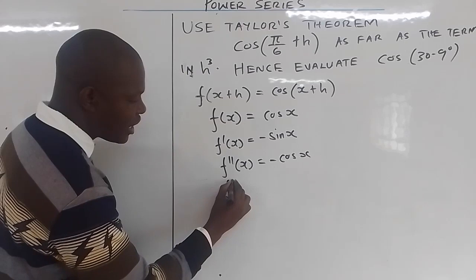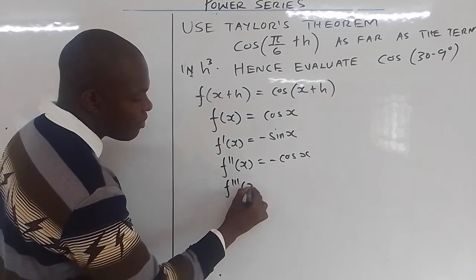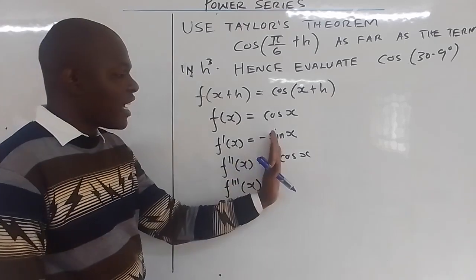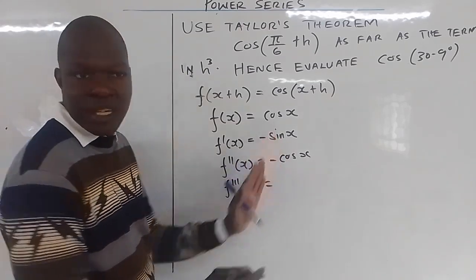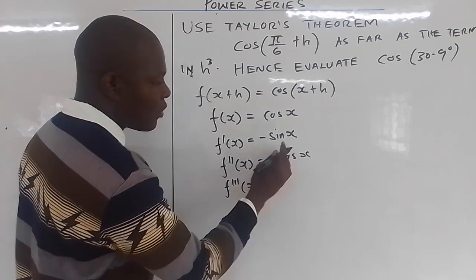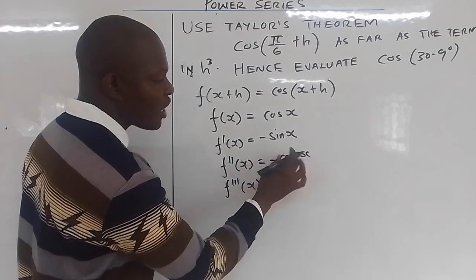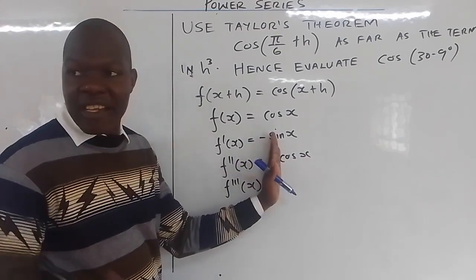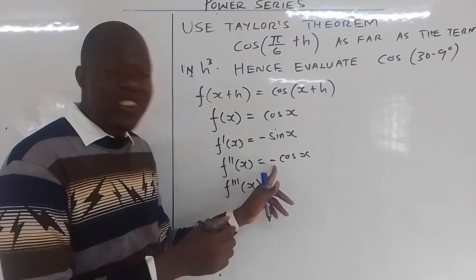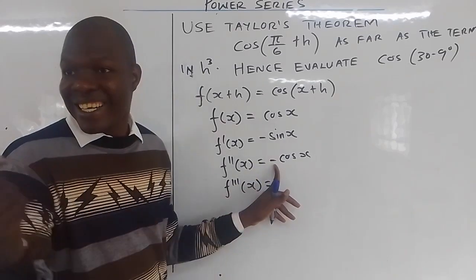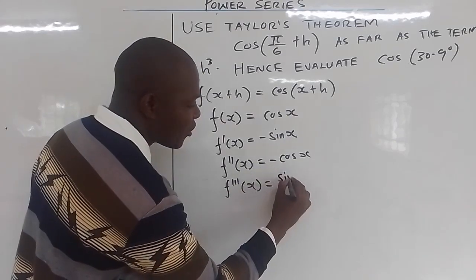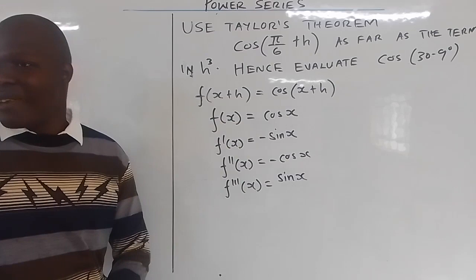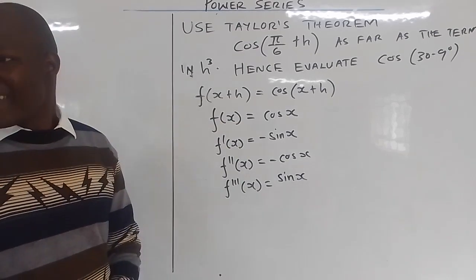Then if you differentiate f(x) for the third time, you take negative outside. If you differentiate cos(x) you get negative sin(x), then you multiply by this negative — negative times negative sin(x) is sin(x). So f'''(x) = sin(x).